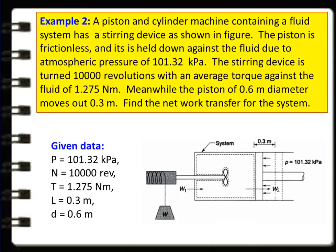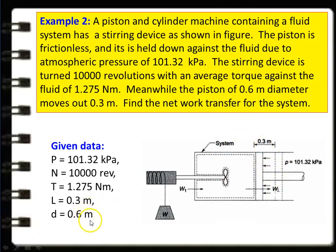We take another similar example. A piston and cylinder machine containing a fluid system has a stirring device. The piston is frictionless and held down against the fluid due to atmospheric pressure of 101.32 kPa. The stirring device is turned 10,000 revolutions with an average torque against the fluid of 1.275 Nm. Meanwhile the piston has a diameter of 0.6 meters and moves 0.3 meters. The piston reciprocates 0.3 meters, diameter equals 0.6 meters, and pressure is 101.32 kPa.